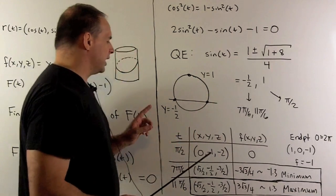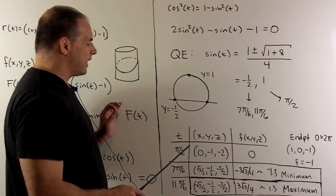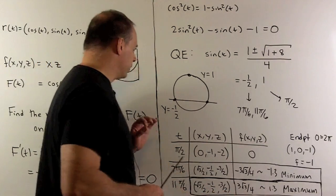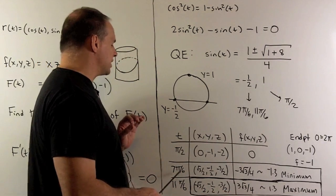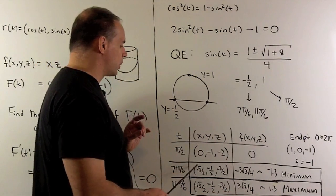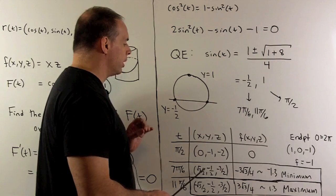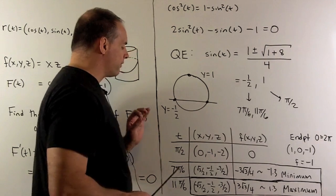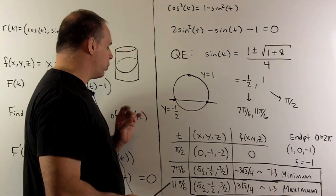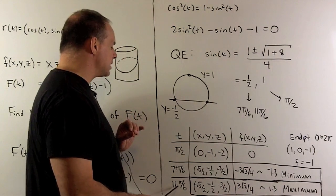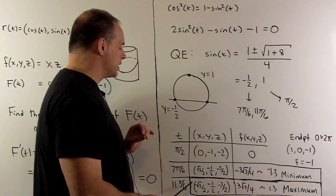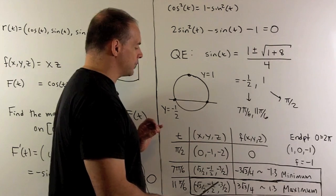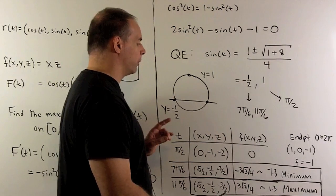We see that we're going to have a minimum at the point corresponding to t equals 7π/6, which is (√3/2, −1/2, −3/2), and a maximum at the point for t equals 11π/6, which is (−√3/2, −1/2, −3/2).